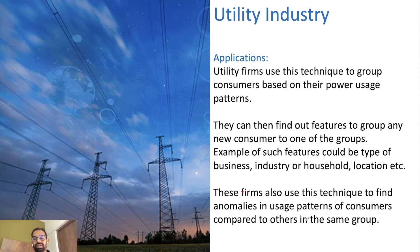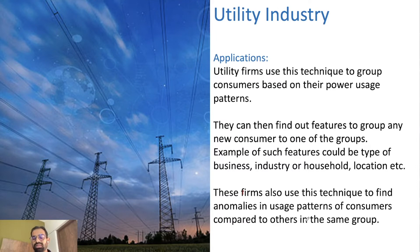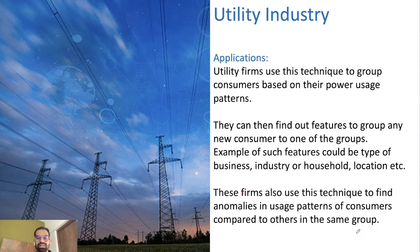Similarly, utility firms use this technique to group consumers based on their power usage patterns. They can then find features to assign any new consumer to one of the groups. Examples of such features could be type of business, industry or household, and location of the consumer. These firms also use this technique to find anomalies in usage patterns of consumers compared to others in the same group.